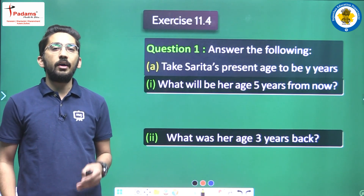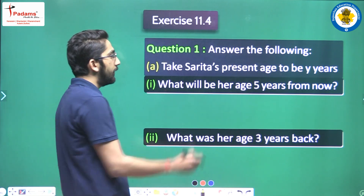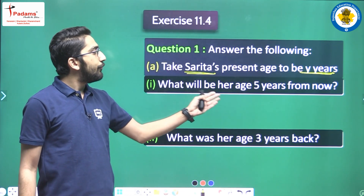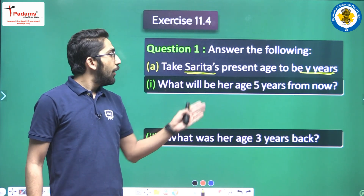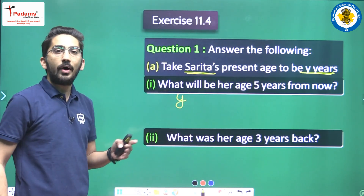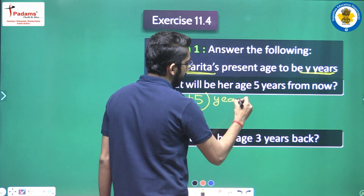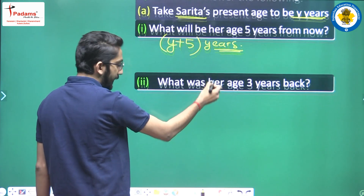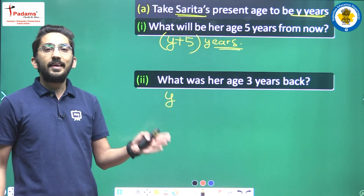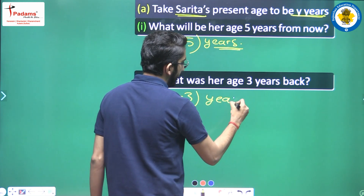Now let's move on to the exercise. The first question: take Sarita's present age to be y years. What will be her age five years from now? Five years from now means 5 years added to the current age. If current age is y, then five years from now it will be y plus 5. So her age five years from now will be y plus five years. What was her age three years back? If current age is y years, then three years ago it will be y minus three years.